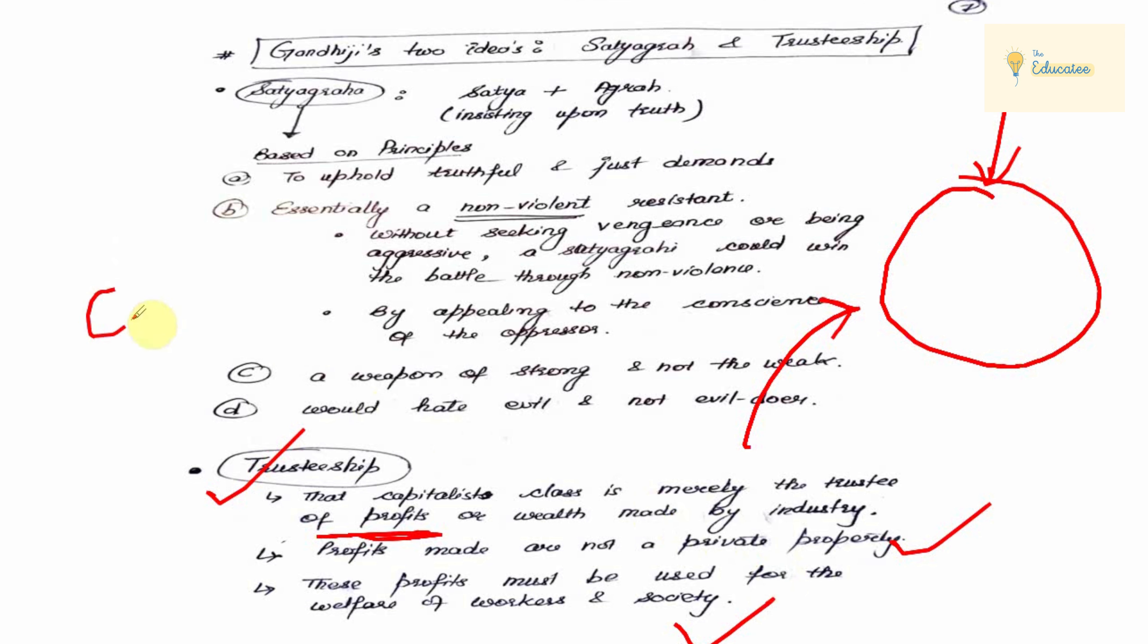You can see as corporate social responsibilities, whatever you have in Tata, Reliance, what do they do? These are welfare activities. They are doing so many. They have food, education, so many different activities.